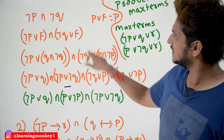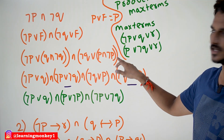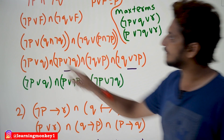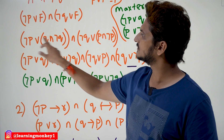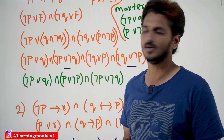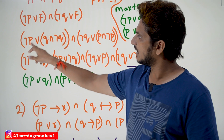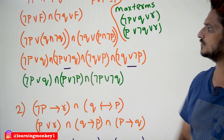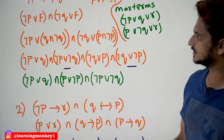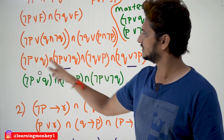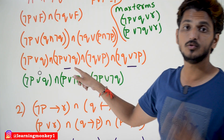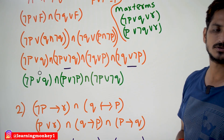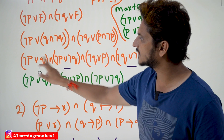Similarly, instead of the other false, we place p conjunction negation p, which is always false. So now apply the distributive law. Negation p conjunction q disjunction q, conjunction negation p disjunction negation q. See — this is a product, and this is a max term for two variables. Similarly, apply the distributive law and you get these two max terms. This is in the form of product of max terms.